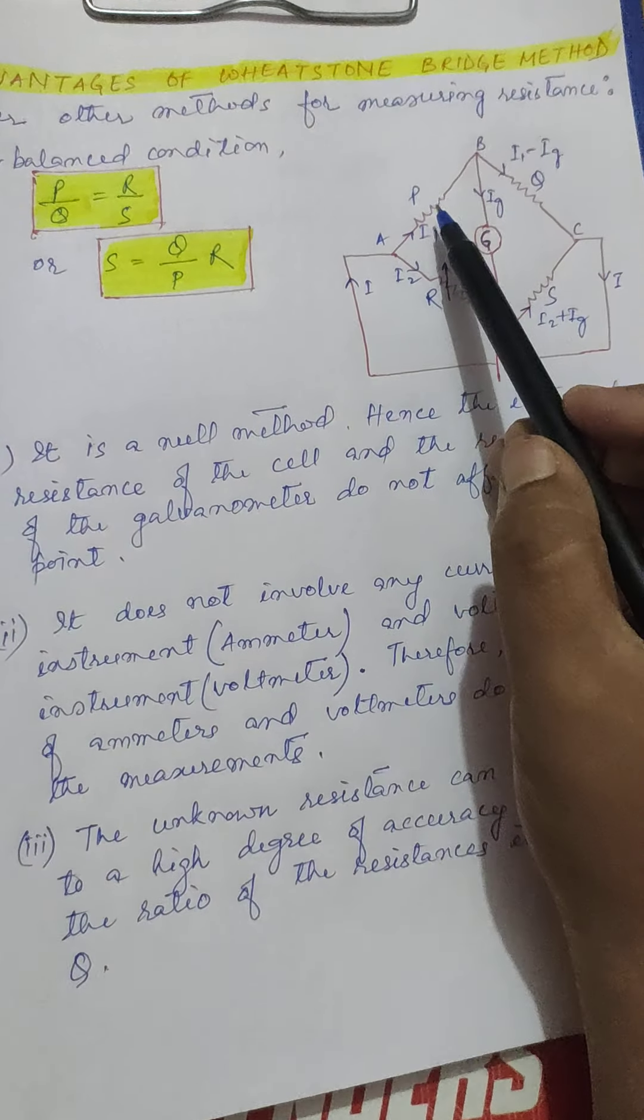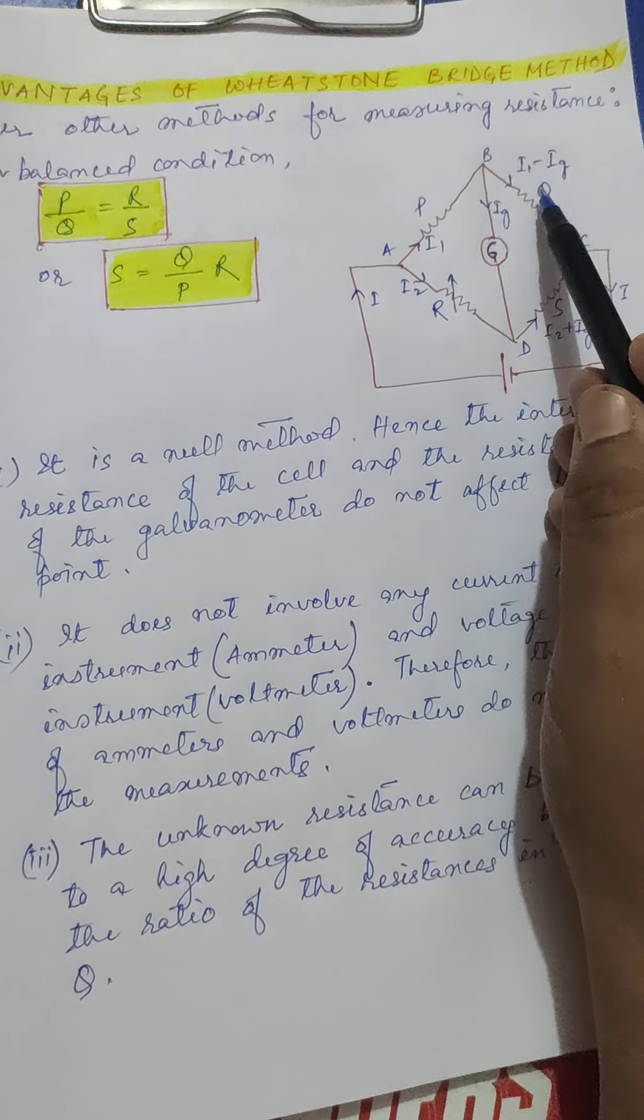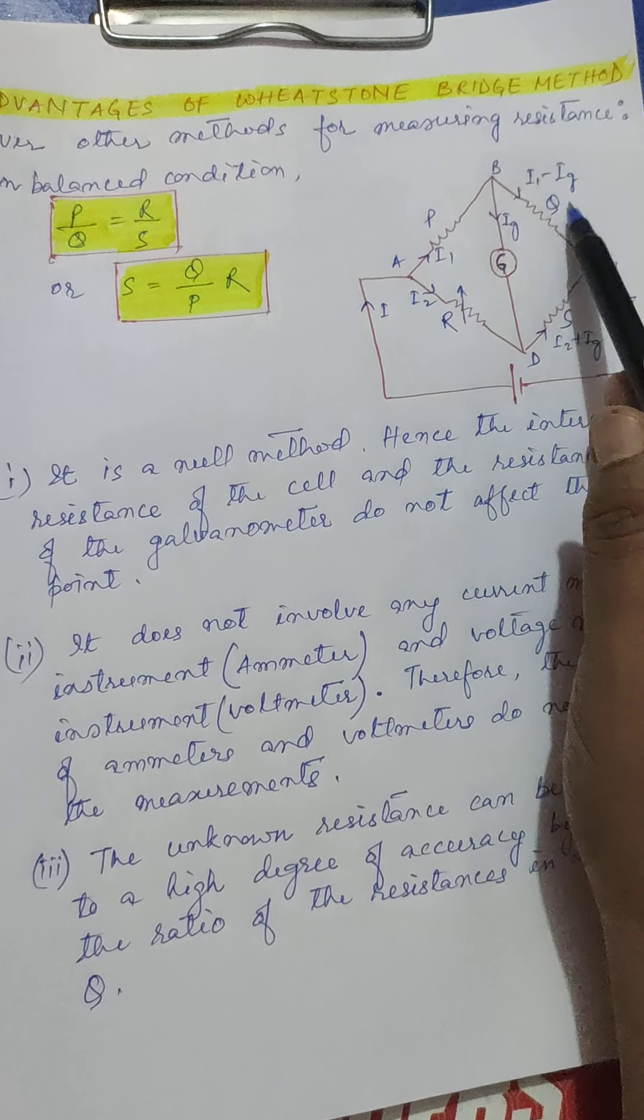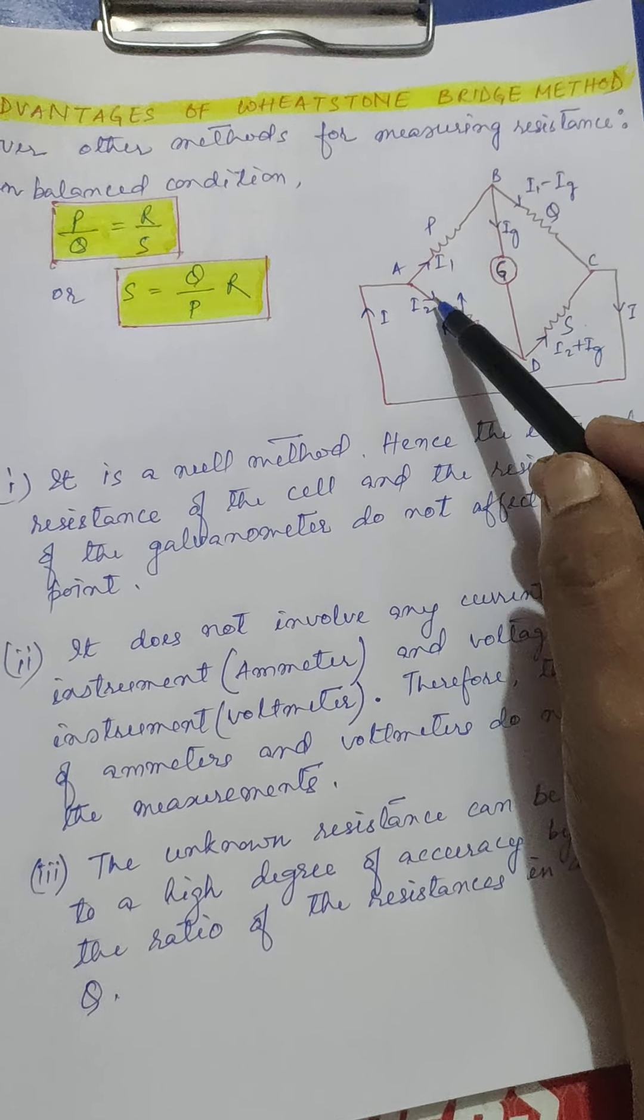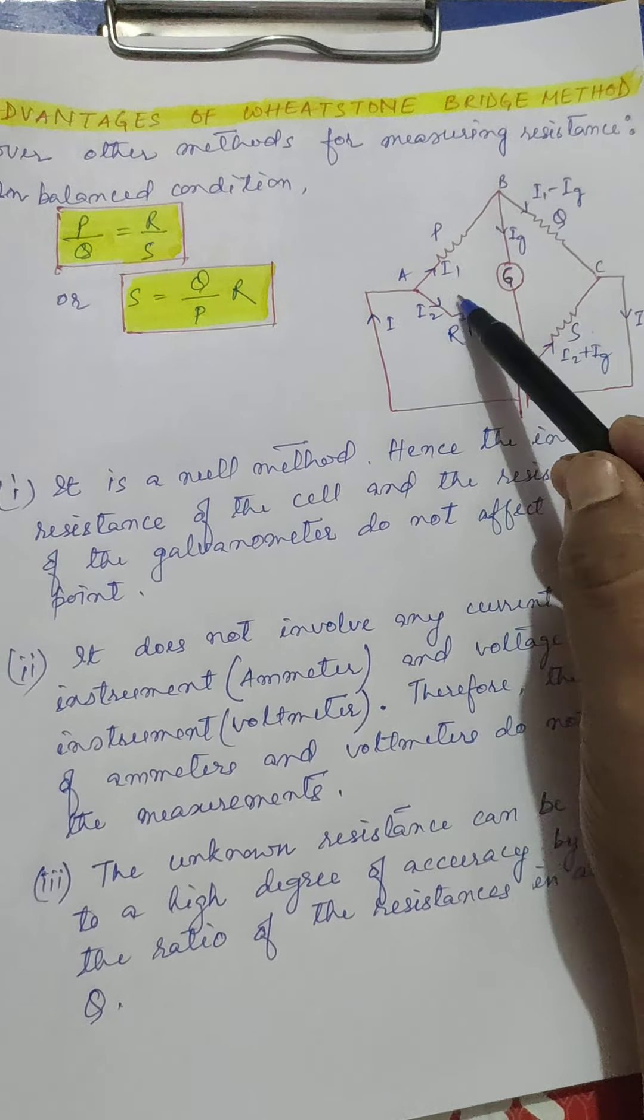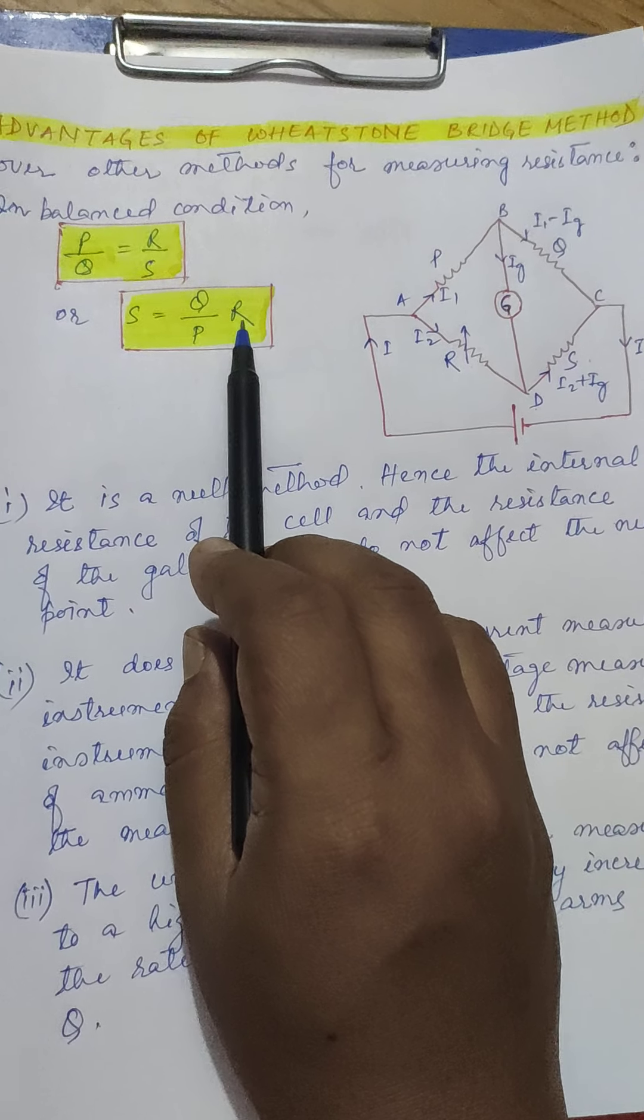As we have already considered, the Wheatstone Bridge is a set of four resistances P, Q, R, S, where R is the variable. We fix the value of R in such a way that P by Q becomes equal to R by S in the balanced condition where B and D have same potential, that is no current flows through it. Now when that happens, the value of S which is the unknown resistance will be given by Q by P into R.